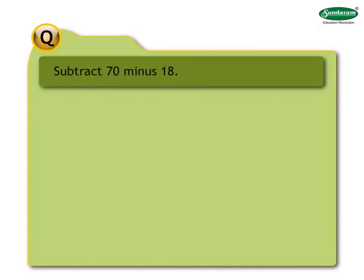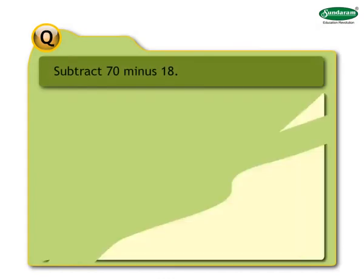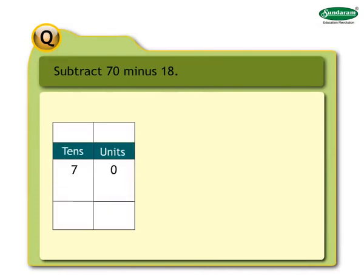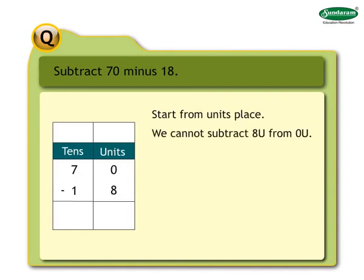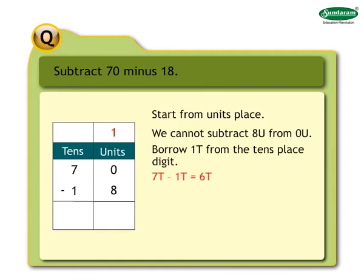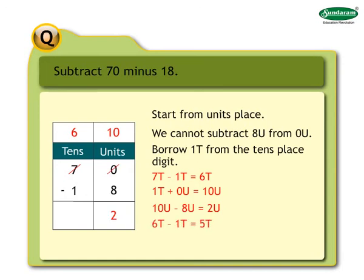Now subtract seventy minus eighteen. Solution: write the numbers in vertical arrangement starting from the units place. We cannot subtract eight units from zero units, so we borrow one ten from the tens place. Tens place becomes seven tens minus one ten equals six tens. Units place becomes one ten plus zero units equals ten units. Ten units minus eight units equals two units. Six tens minus one ten equals five tens. Hence seventy minus eighteen equals fifty-two.